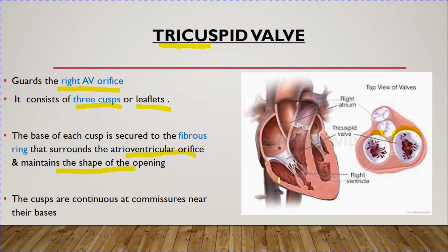The fibrous skeleton of the heart mainly anchors the valves — the tricuspid valve, the mitral valve, the aortic valve, and the pulmonary valve. The base of each cusp is attached to the fibrous ring. These three cusps are continuous at the commissures near their bases. The word 'commissure' means unison, so the three leaflets are united at the region of the commissures.